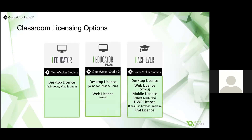We have three types of licenses available, purchasable through Studica. We have Educator, which contains desktop. We have Educator Plus, which contains desktop and web — this is exclusive to Studica as several schools they work with have requested the capability to export to HTML5. And then we have Achiever, which is desktop, mobile, web, UWP, and now PlayStation. There are one-year and two-year options. The seats are concurrent use licenses so they can be used for multiple classes. GameMaker can be used on PC and Mac — not yet on Chromebook, but due to overwhelming demand from these webinars we are definitely looking into it and actually developing it.